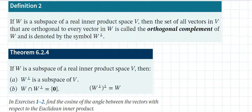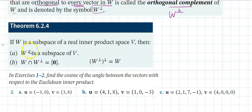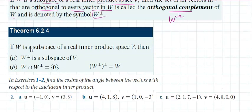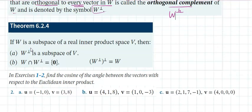If W is a subspace of a real inner product space V, the set of all vectors in V that are orthogonal to every vector in W is called the orthogonal complement of W, denoted W-perp. The orthogonal complement is itself a subspace of V; the only vector common to W and W-perp is the zero vector, and the orthogonal complement of W-perp gives back W.